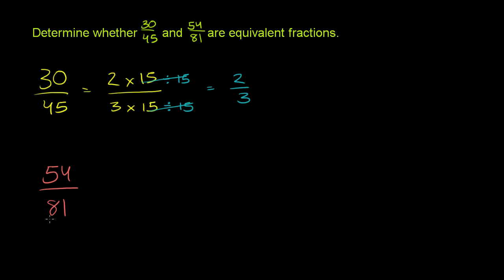Now let's see. Nothing really jumps out at me. Let's see, 9 is divisible into both of these. We could write 54 as being 6 times 9, and 81 is the same thing as 9 times 9. You can divide the numerator and the denominator by 9. So we could divide both of them by 9. 9 divided by 9 is 1, 9 divided by 9 is 1. So we get this as being equal to 6 over 9.